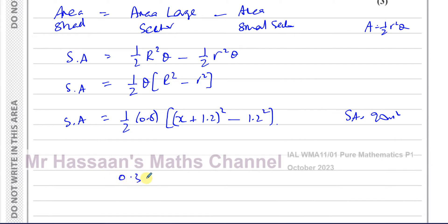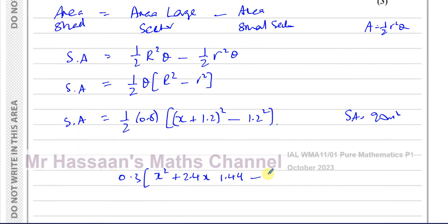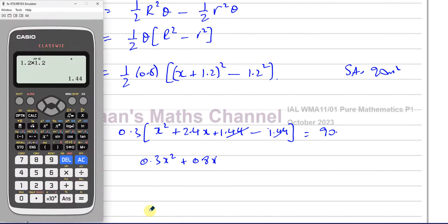Expanding: 0.3 times [X squared plus 2.4X plus 1.44 minus 1.44] equals 90. The 1.44 terms cancel, leaving 0.3X squared plus 0.3 times 2.4X equals 90. Checking: 0.3 times 2.4 gives 0.72, so we have 0.3X squared plus 0.72X equals 90.